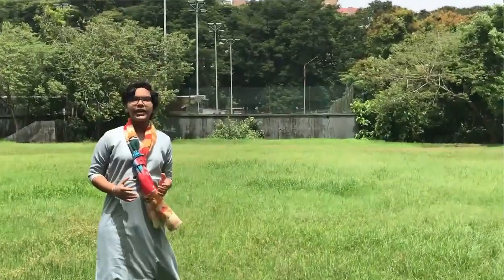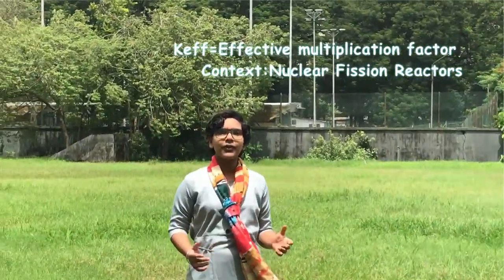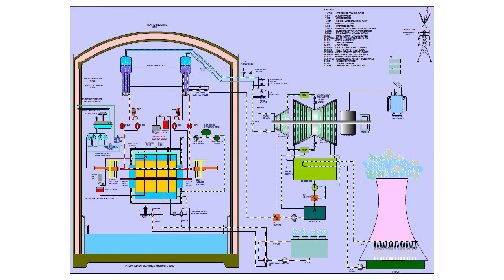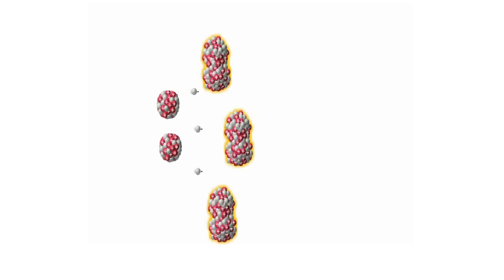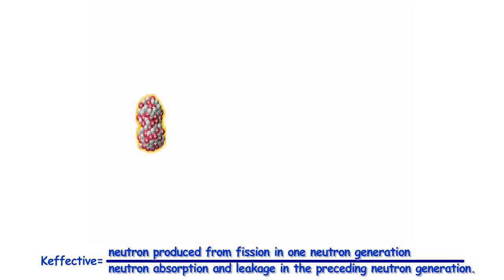Hi, I'm Sanda Masroon and I'm going to explain the concept of effective multiplication factor k-effective. In nuclear power plants, heat is generated by a nuclear fission chain reaction, where uranium-235 atoms are bombarded by neutrons releasing loads of energy. For a self-sustained fission chain reaction, every fission initiates another fission.